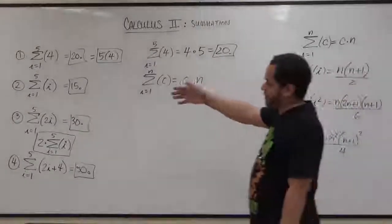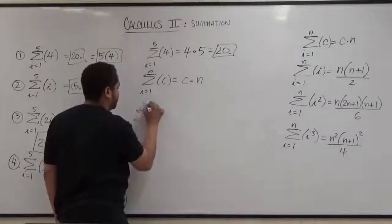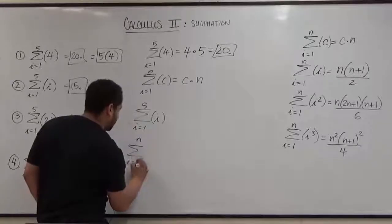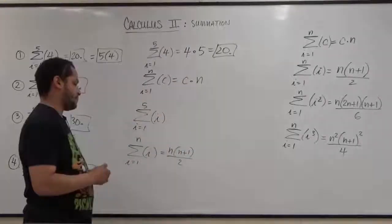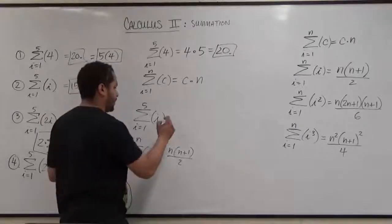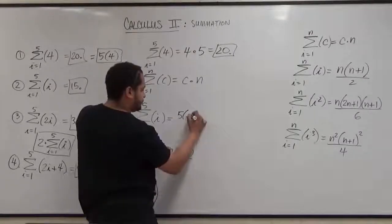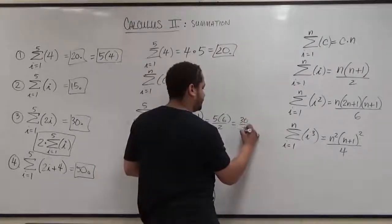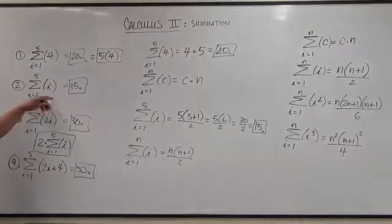Now let's try the i formula. The summation from 1 to 5 of i gives us 15 — let's verify with the formula. We have n times (n+1) over 2, which is a very familiar statistical formula. Plugging in n=5: we get 5 times (5+1) divided by 2, which becomes 5 times 6 divided by 2, which is 30 divided by 2, which is 15. This also gives us the same solution we had in our summation.